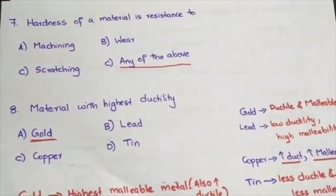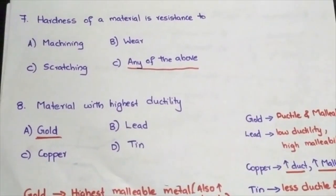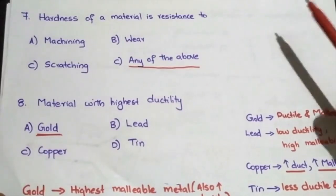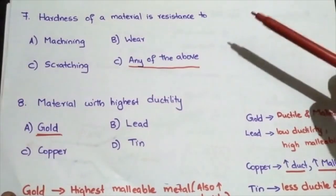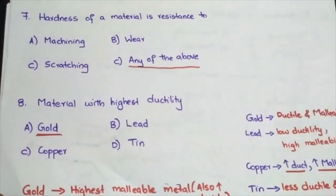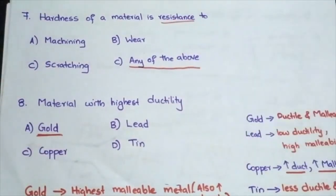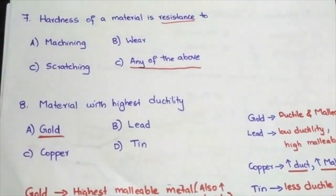Next question: hardness of a material is resistance to — machining, wearing, scratching, or any of the above? From the definition of hardness, it is a resistance to all these things — machining, wearing, and scratching. So the answer is any of the above. The main concept is that hardness is a resistance property.